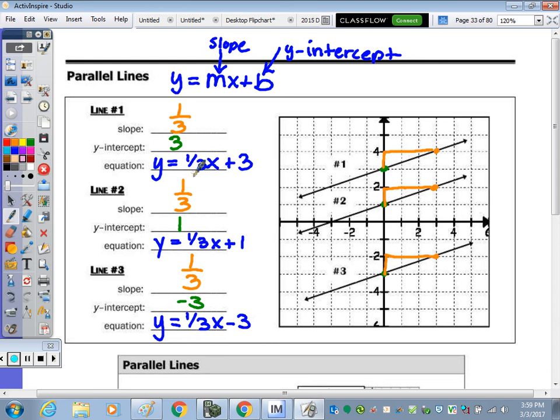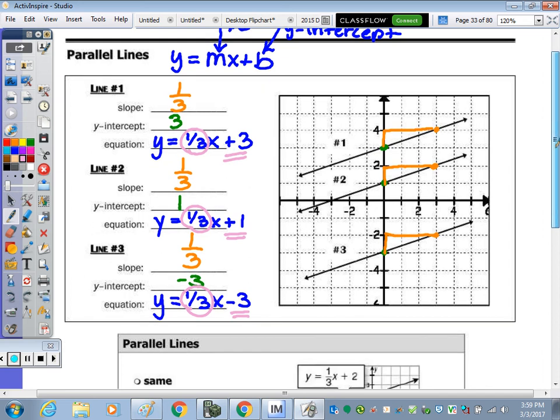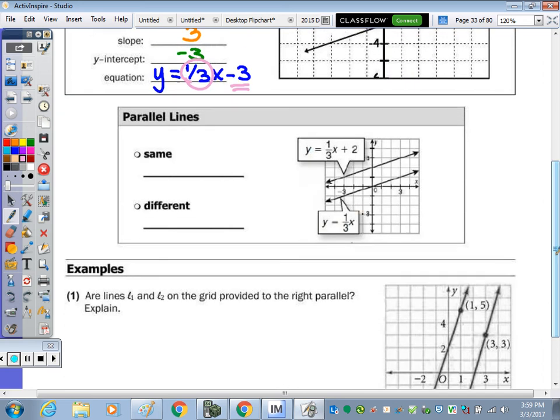So as we mentioned, the slope in each one is the same. They just have a different y-intercept. Okay, so down below to summarize, parallel lines have the same slope but different y-intercepts.